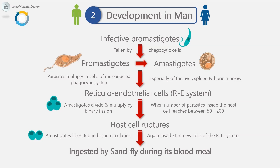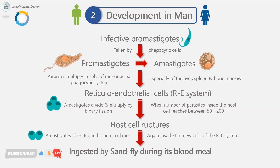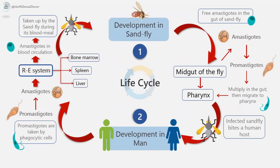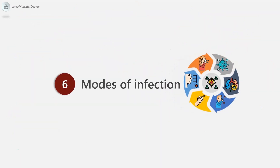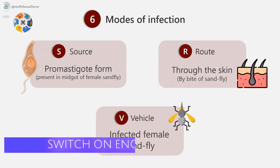Inside the reticuloendothelial cells, the amastigote form divides and multiplies by binary fission. When the number of parasites inside the host cell reaches between 50 to 200, the host cell ruptures and the parasites are liberated into the blood circulation, from where they again invade new reticuloendothelial cells. Hyperplasia of reticuloendothelial cells leads to enlargement of the liver and spleen. When mononuclear cells are filled with amastigotes, they rupture, liberating parasites which invade other cells including polymorphs and are phagocytosed.